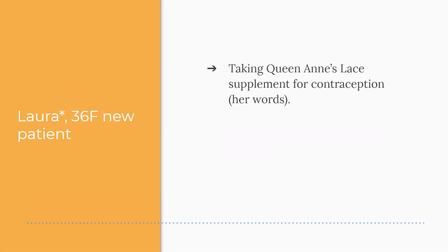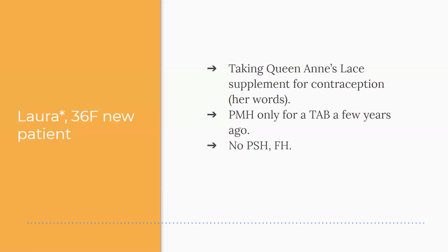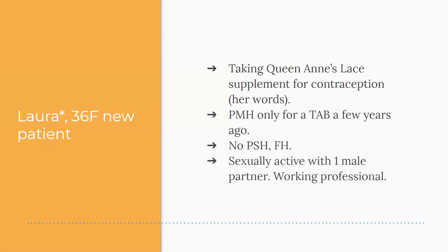She's taking Queen Anne's Lace herbal supplement for contraception — this was actually the first time I'd heard of this, and it's not common at all. Her past medical history is only significant for a therapeutic abortion a few years ago, no past surgical history or family history that she knows of. She's sexually active with one male monogamous partner and is a working professional with a 9-to-5 job.